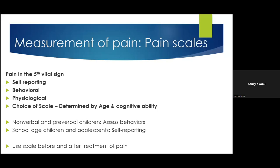How do you decide which tool or scale to use? It is mainly determined by the age and cognitive ability of the child. For the non-verbal or pre-verbal child who has not learned to speak, we assess their behaviors. For school-age children and adolescents who are cognitively intact and able to self-report, we use self-report tools. Importantly, you use the scale before the intervention to assess pain and again after, to see if the intervention has worked.